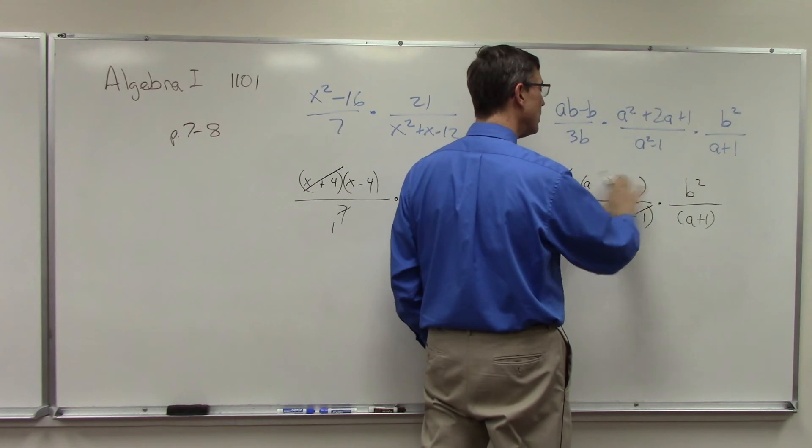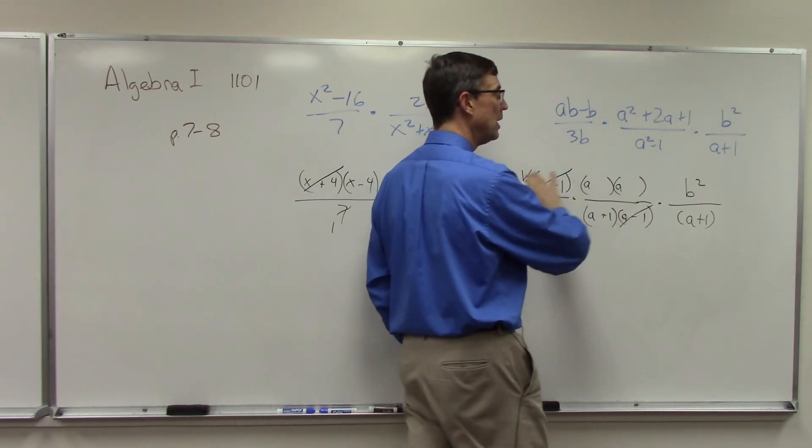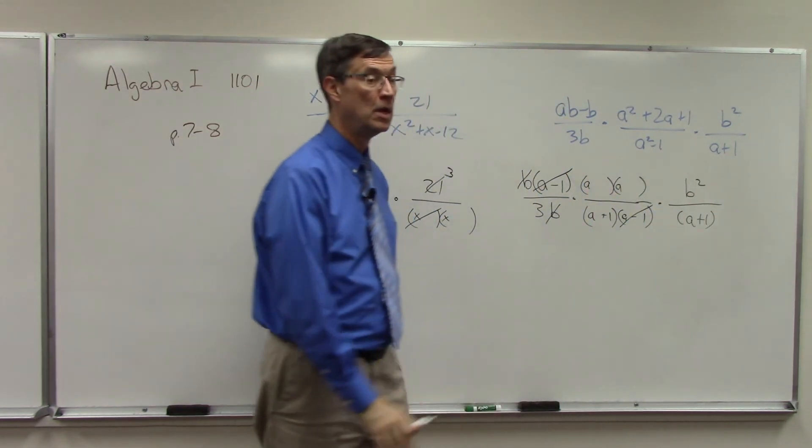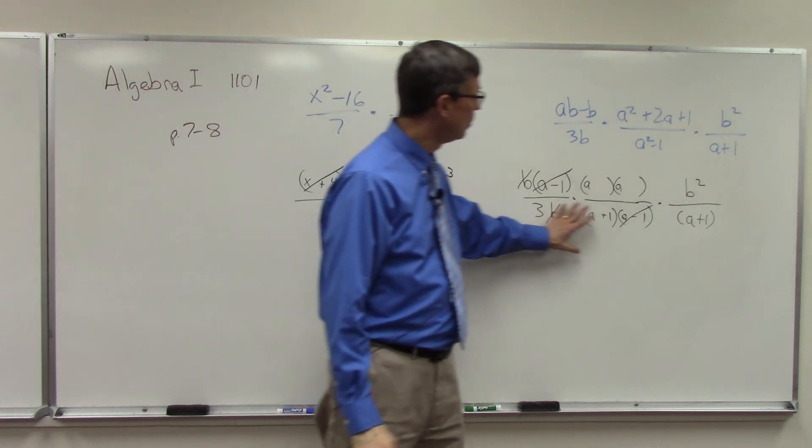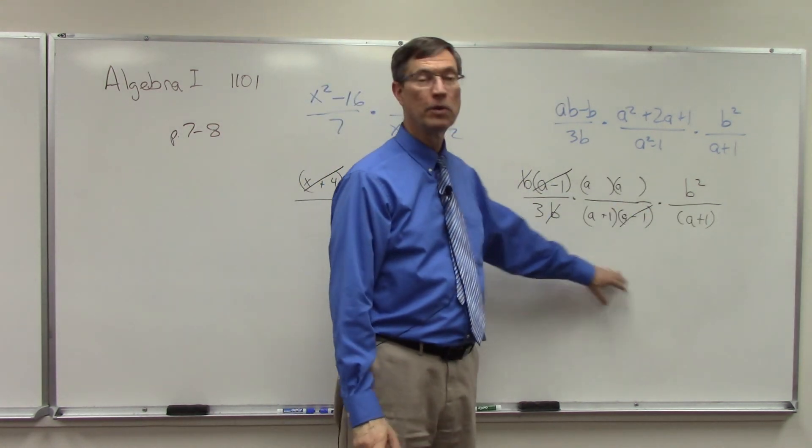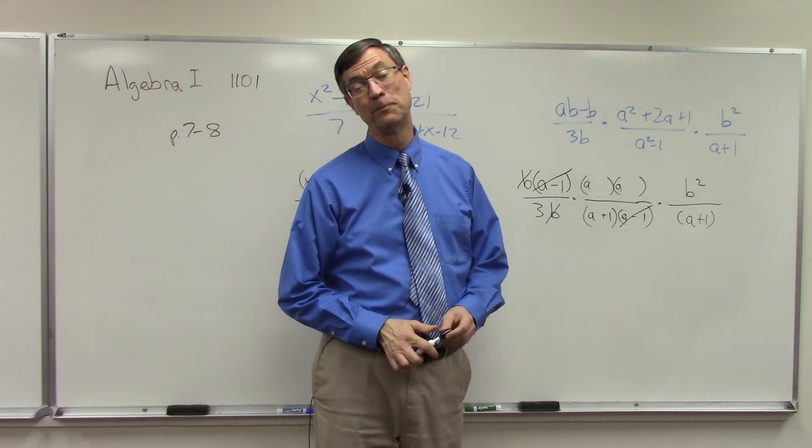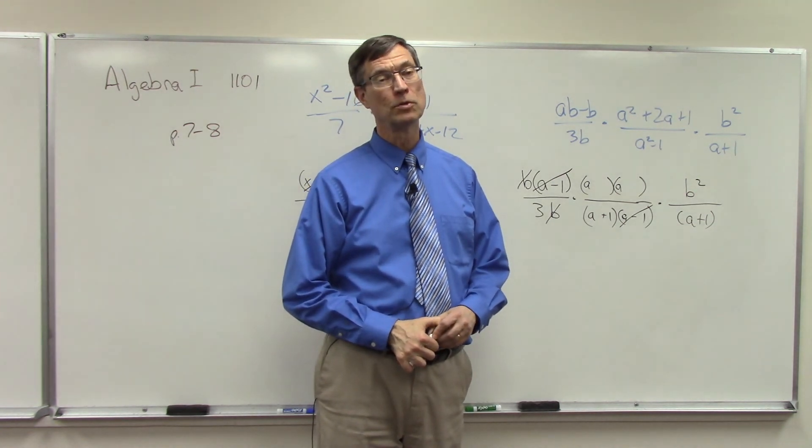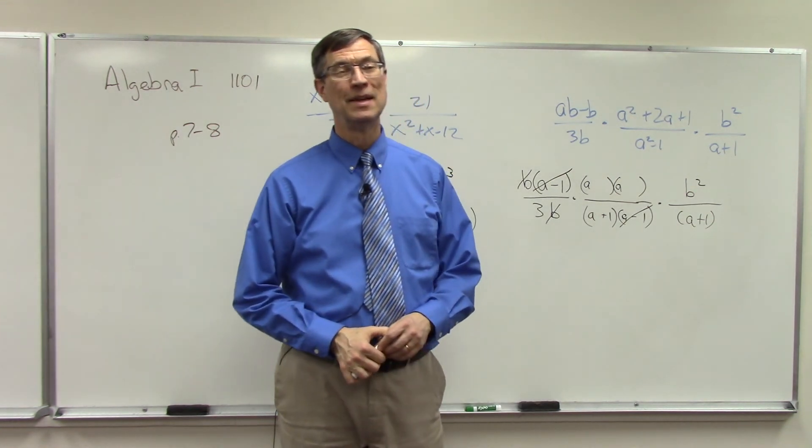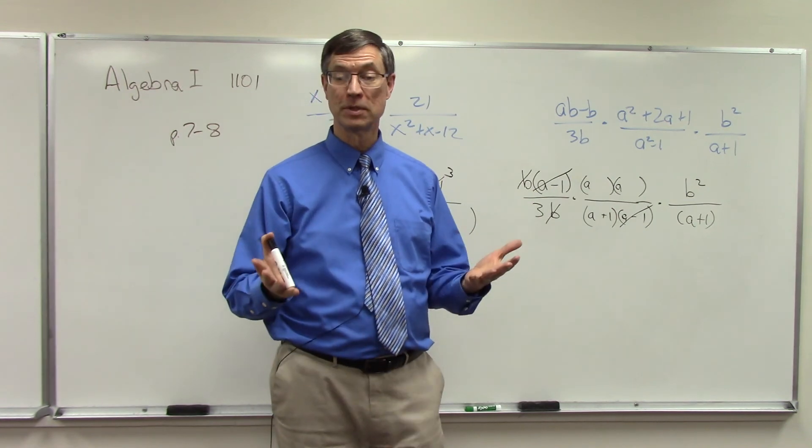So you can just kind of see what else will cancel, and then you're just going to take whatever is left on the top and that stays in the numerator. Anything that's left all the way across the bottom, just put it all together and that's your denominator. Okay, so hopefully that makes a little more sense to you and that you'll do well as you finish these couple of pages.